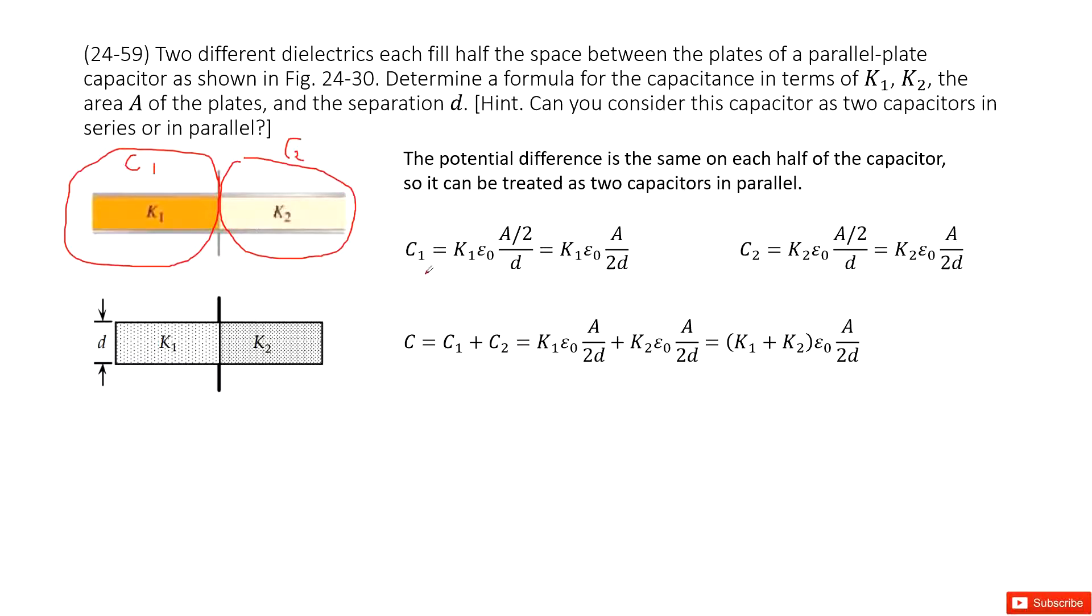Now we can write the function for C1. We use dielectric k1 times epsilon naught, and then the cross-sectional area. This part is just half of it, so A divided by 2. And then the distance is d. So we get the function there.